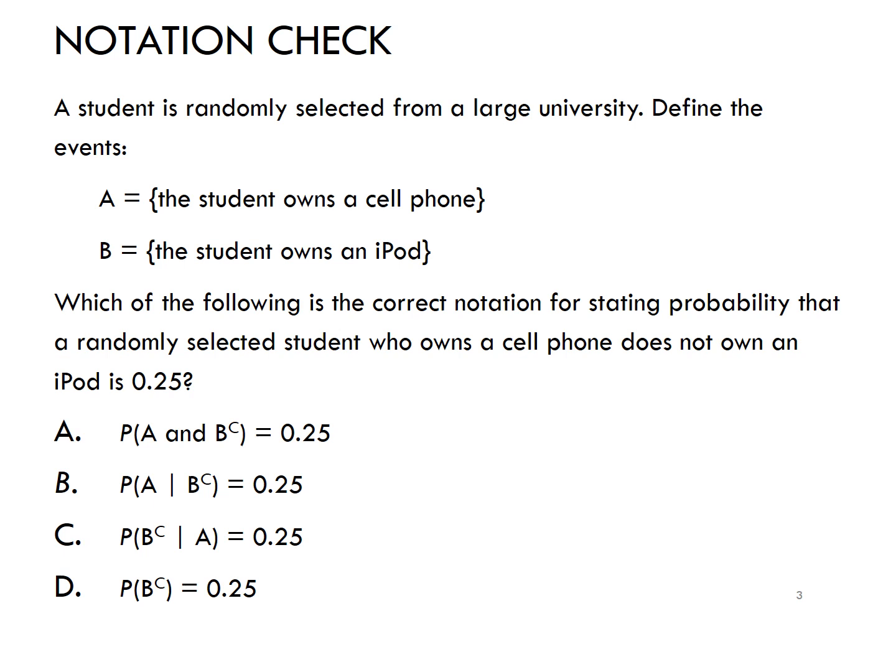Let's say in words what the other options mean. Option A would read: the probability a randomly selected student owns a cell phone and does not own an iPod — note if the word 'and' is in the notation it must be in the statement and vice versa. Option B would read: the probability a randomly selected student who does not own an iPod does own a cell phone. Option D would say: the probability a randomly selected student does not own an iPod. Thinking back to the definition of probability as a long-run proportion, if we interpret 0.25, out of 100,000 students who own a cell phone, about 25,000 of them will not own an iPod.